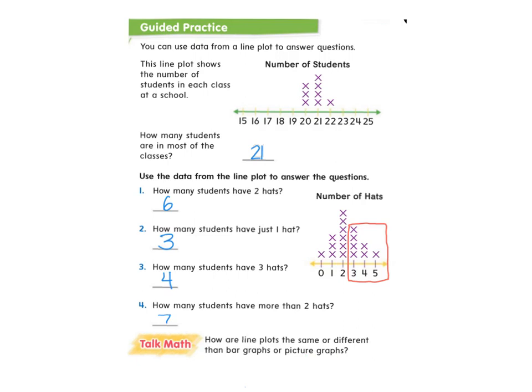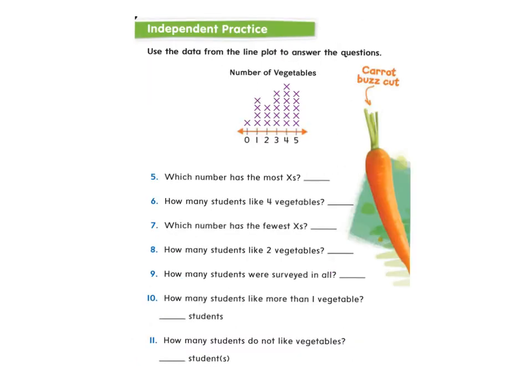Think about how line plots are the same or different than bar graphs or picture graphs. This next line plot is talking about the number of vegetables. Each X represents one student, and these numbers show how many vegetables they like. The first question asks: which number has the most X's, also known as the most students, because that's what each X means.